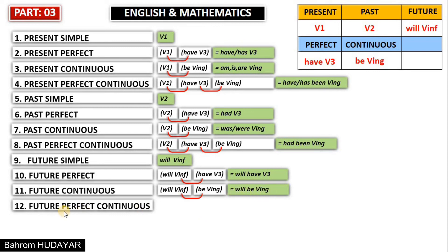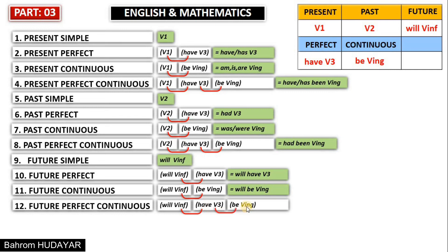And finally we have future perfect continuous — one of the most difficult tenses in English. But in this system, trust me, it is not difficult. All you have to do is write the formulas in order: future = will + verb infinitive, perfect = have + verb three, continuous = be + verb-ing. Multiply them. The infinitive form of have is have, and the third form of be is been. Result: will + have + been + verb-ing. This is the main formula of future perfect continuous.